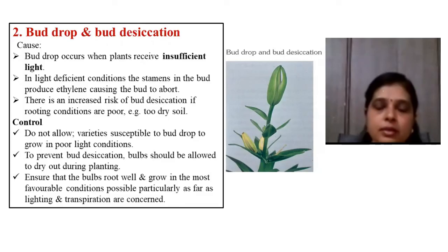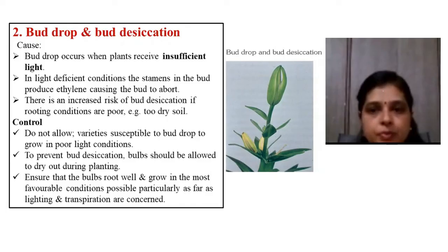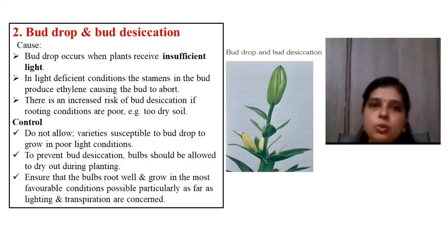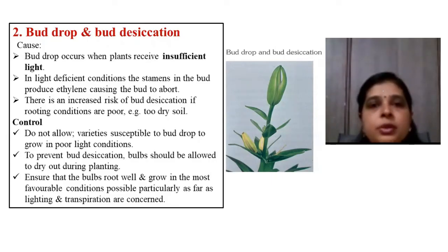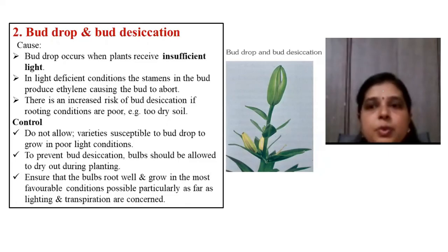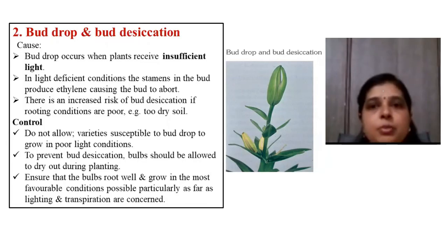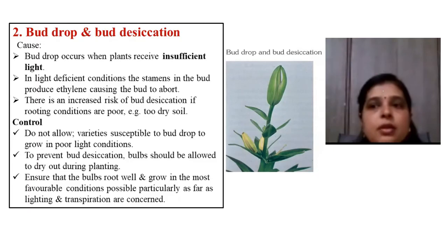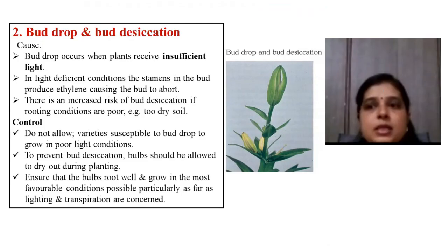Like gladiolus, lilium also exhibits a period of dormancy. To break the dormancy of lilium, bulbs are stored at 4 degrees Celsius for two to three months. When lilium bulbs are harvested, they are kept in cold storage at 4 degrees Celsius for 2 to 3 months so that dormancy can be broken.